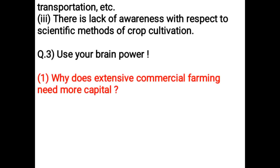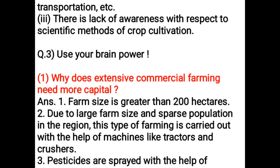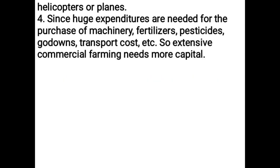Use your brain power — Why does extensive commercial farming need more capital? Farm size is greater than 200 hectares, and farming is carried out with machines like tractors and crushers. Pesticides are sprayed with helicopters or planes. Since huge expenditures are needed for the purchase of machinery, fertilizers, pesticides, godowns, and transport, extensive commercial farming needs more capital.